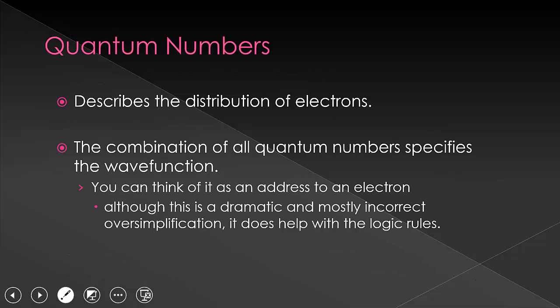Quantum numbers describe the distribution of electrons. We've already talked about two types of quantum numbers, and now we'll go a bit deeper into what those two mean and what they are allowed to be, as well as introducing two new ones. Before we do that, though, this concept can be a little abstract to think about. One analogy that works well to help get an idea of the rules, or at least the logic flow, is thinking of it as an address to an electron. This is a drastic oversimplification and isn't correct in a sort of p-chem quantum mechanics way of thinking about it, but it is helpful in the beginning when you're trying to understand the rules.